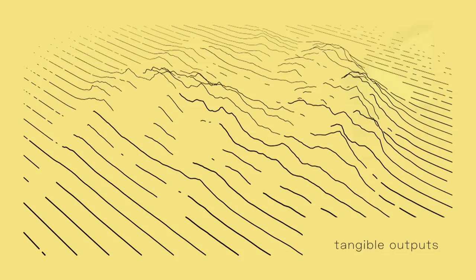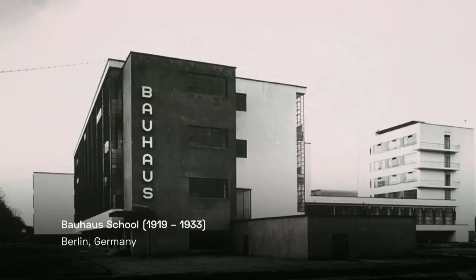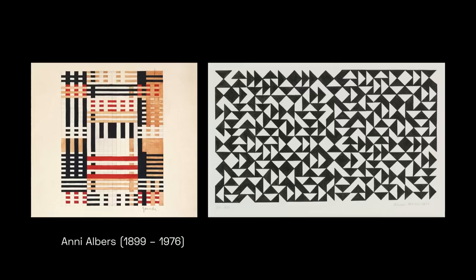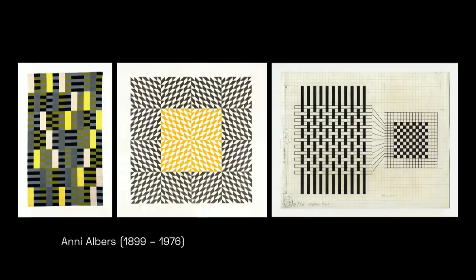Speaking of tangible outputs and hanging things on walls — a bit of context. This year is the 100th anniversary of Bauhaus, a really cool school that did some beautiful design work. One of the students, Annie Albers — I got to see her exhibition at Tate Modern in London recently and it sort of blew my mind. It opened me to this world of textiles and fabrics and the whole idea that textile designers were actually creating systems and rules, because the way weaves work, you had to lay out fabrics in very specific patterns and orders. Here's another batch of her work.